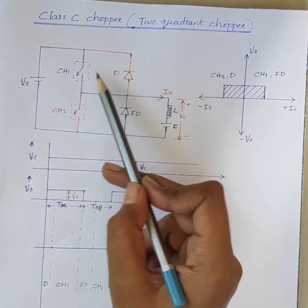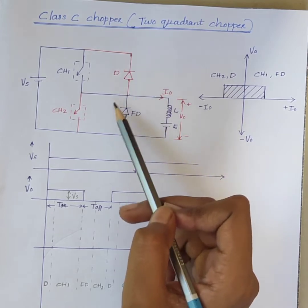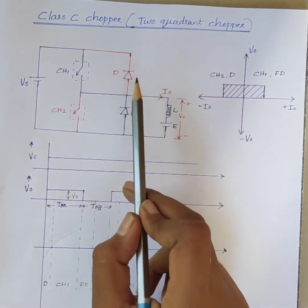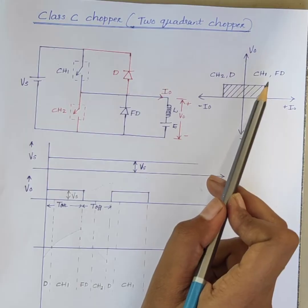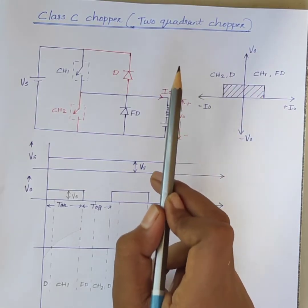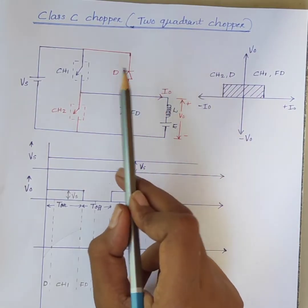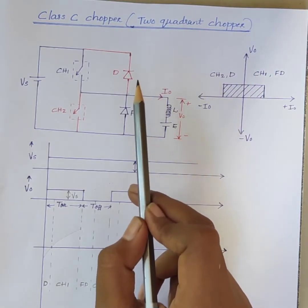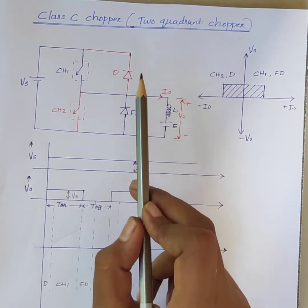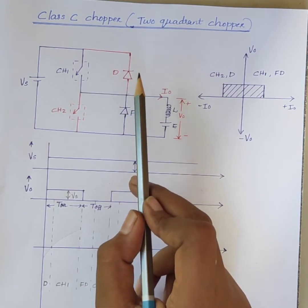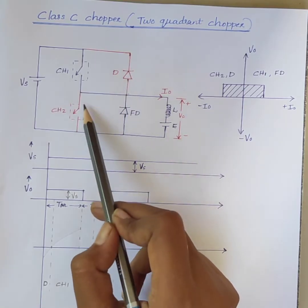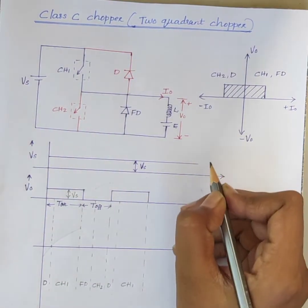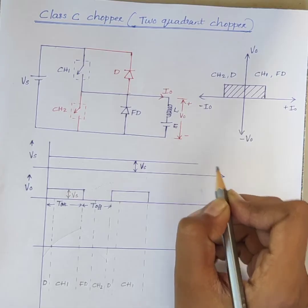Both these choppers are connected in parallel. To obtain first quadrant operation, we should switch on chopper CH1, and for getting second quadrant operation, we should switch on chopper CH2. Consider the first case.